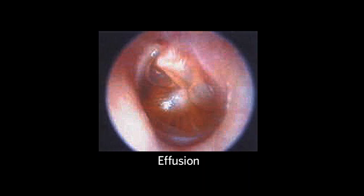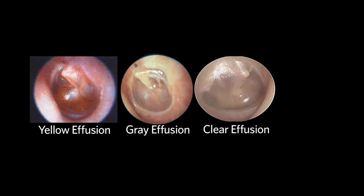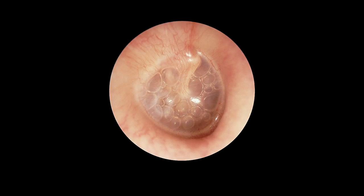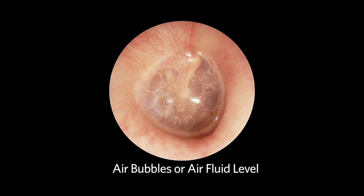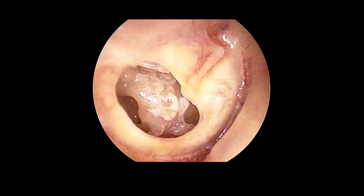A common middle ear abnormality, especially in the pediatric age group, is an effusion which may vary in color, such as yellow, gray, clear, or blue. At times, one might see air bubbles or an air-fluid level. The tympanic membrane may have scarring, commonly known as tympanosclerosis, or it may have a perforation.